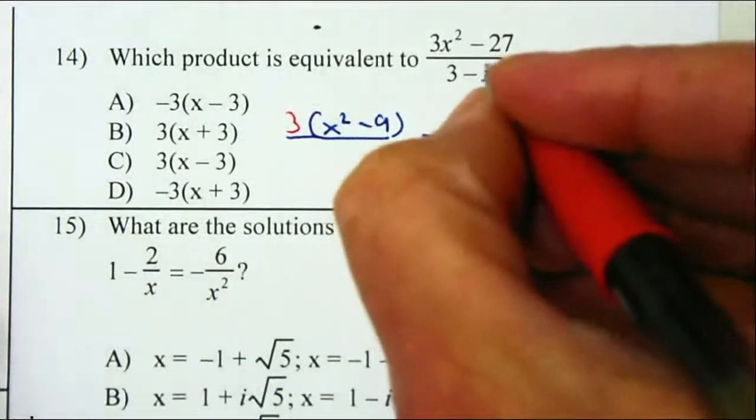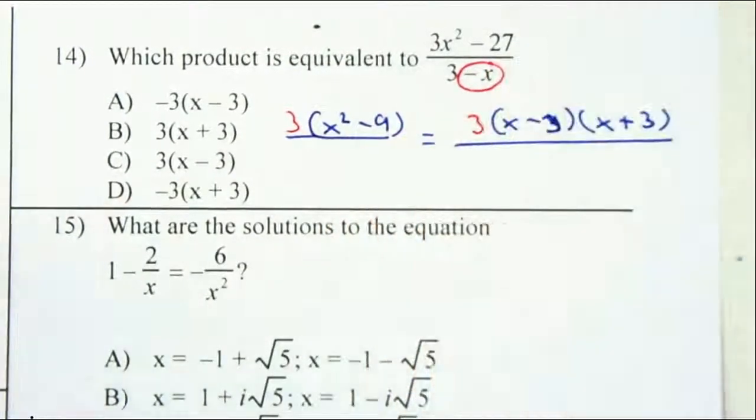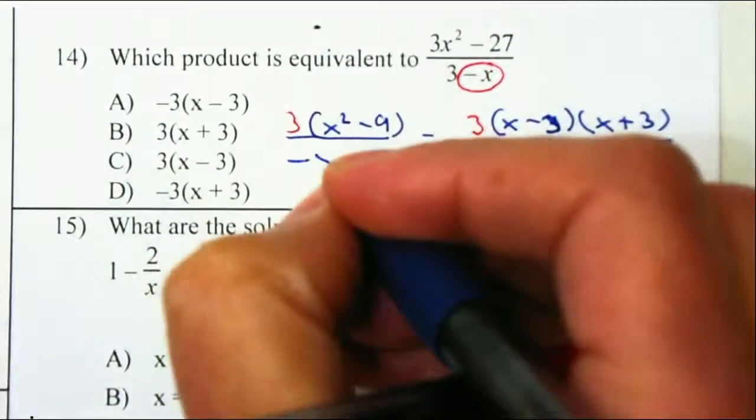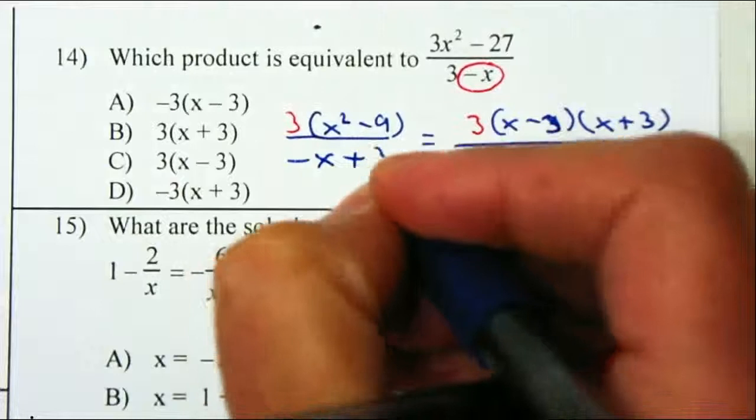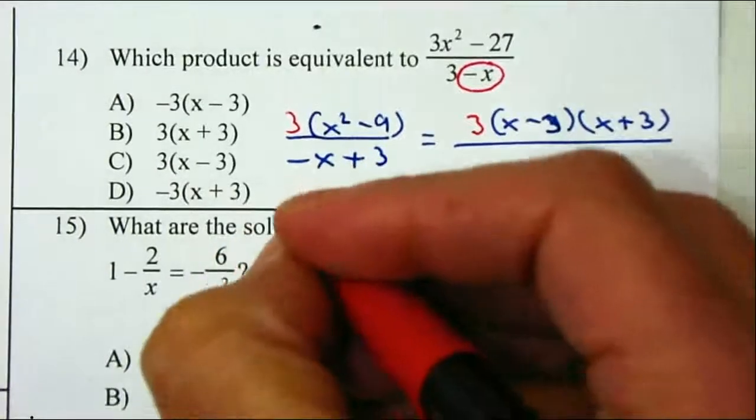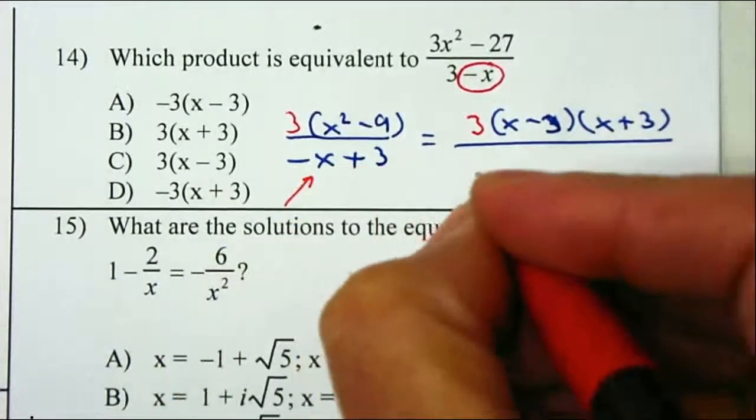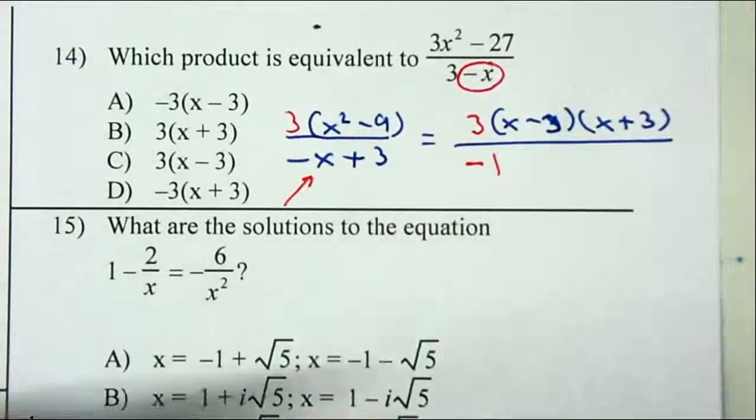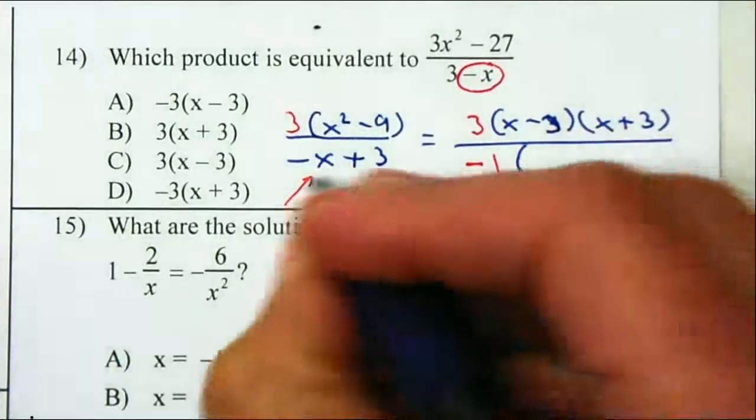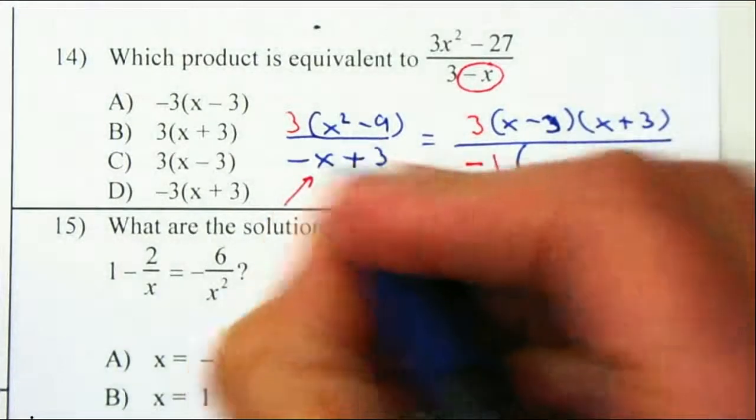You should be able to notice that the x should be first, so this will be a negative x and then we have a positive 3. Whenever the first number is negative, you want to take out a negative. In this case, it's just a negative 1. What's left behind: negative 1 times 1 is negative x, which will be x; negative 1 times a negative 3 becomes a positive 3.